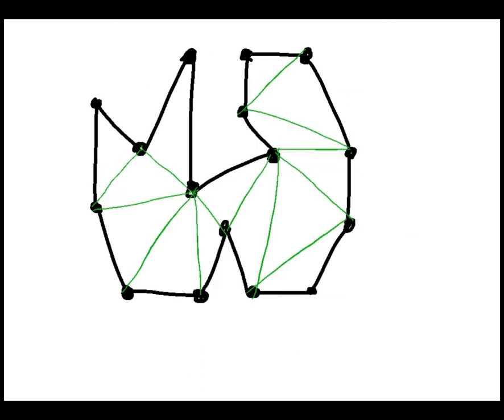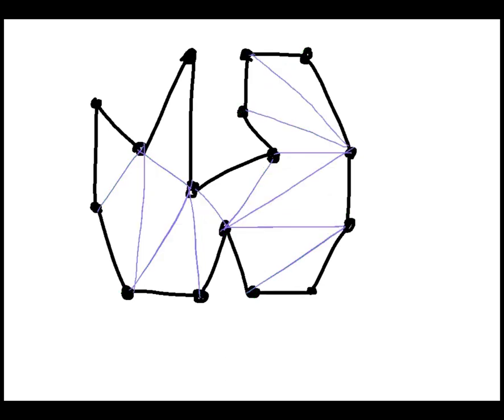So what happens if I had, say, 16 vertices? Well here are two triangulations of a polygon with 16 vertices. Let's count the number of triangles in this one. That's 1, 2, 3, 4, 5, 6, 7, 8, 9, 10, 11, 12, 13, 14 in this one. And if you count, you'll find 14 in the other one.